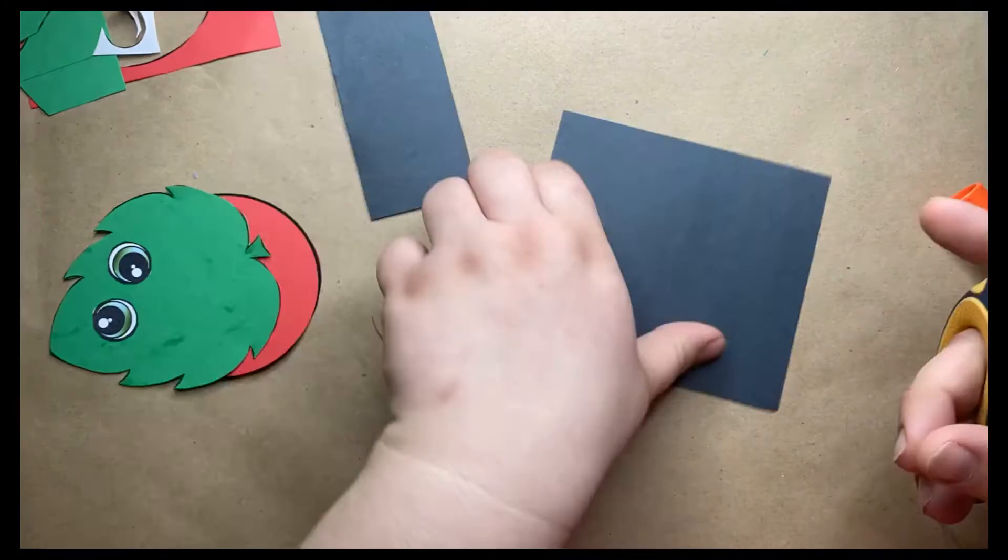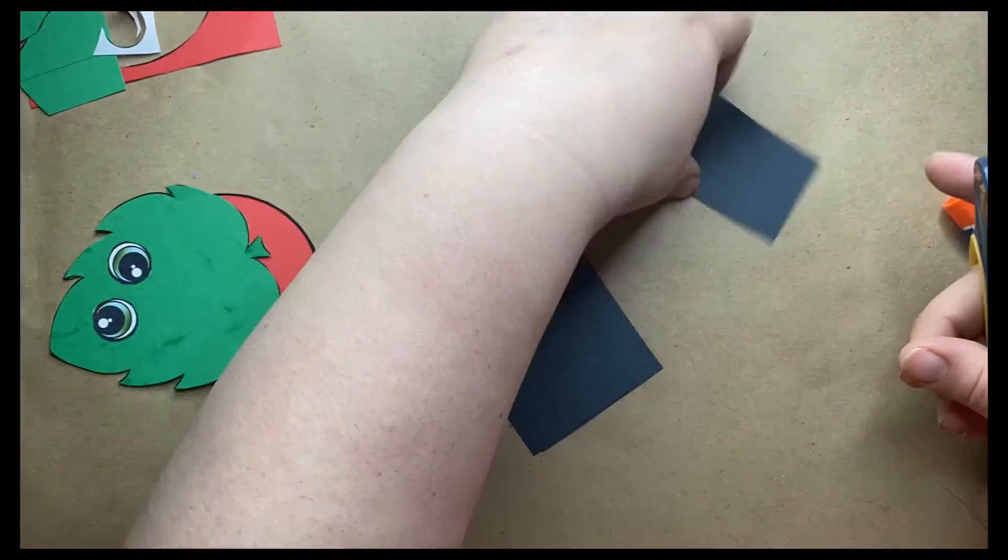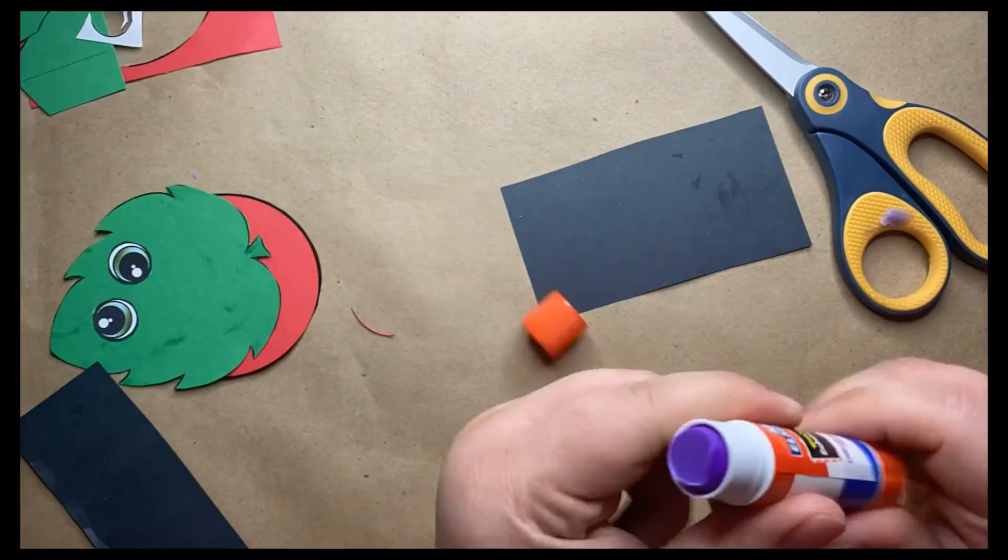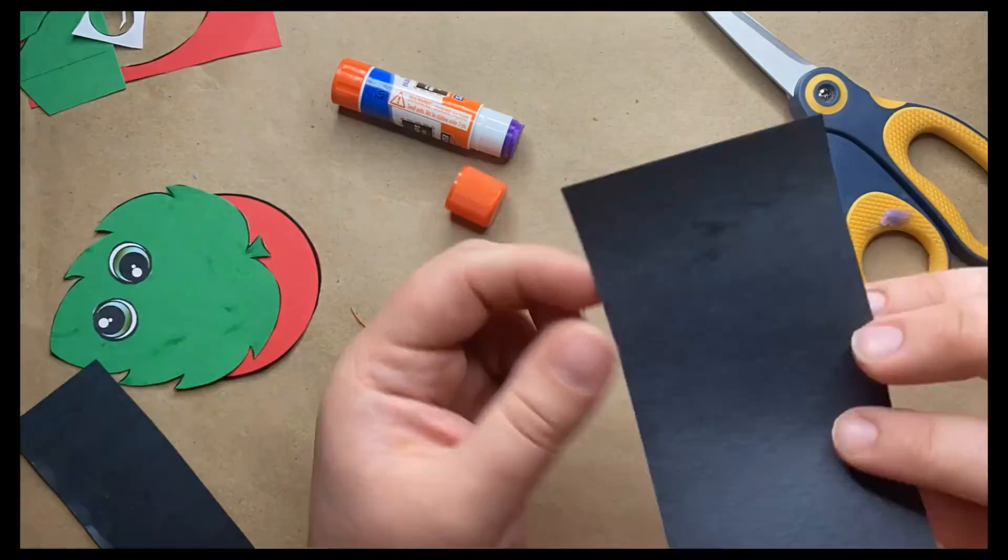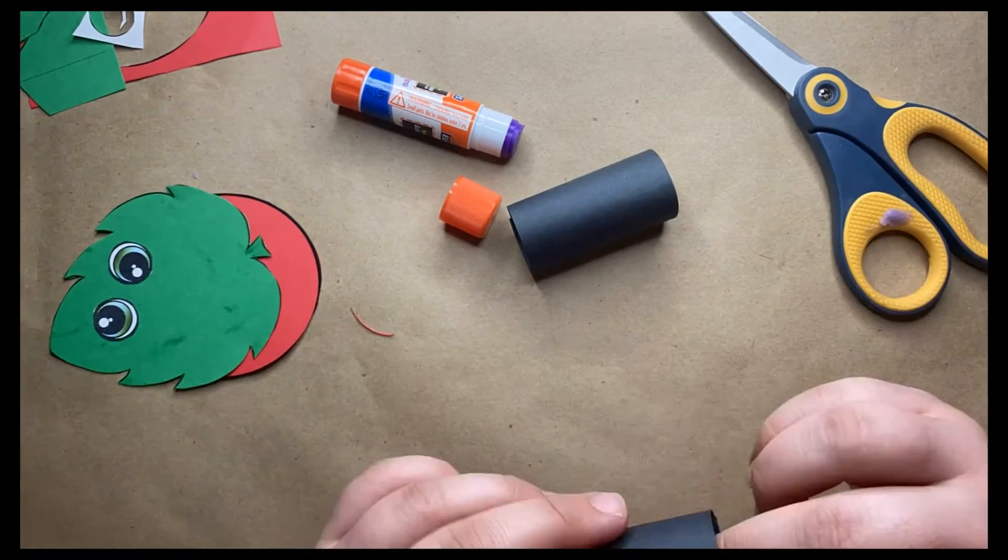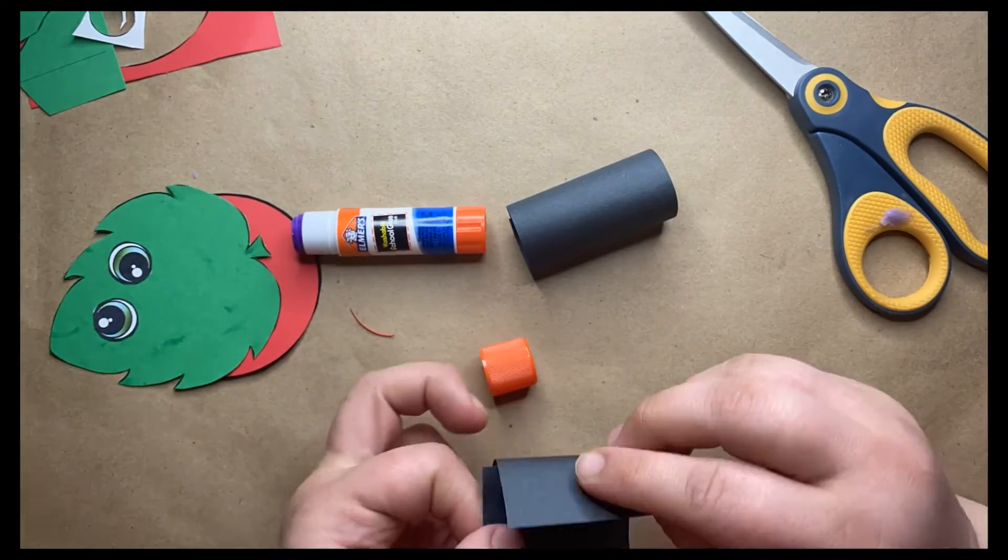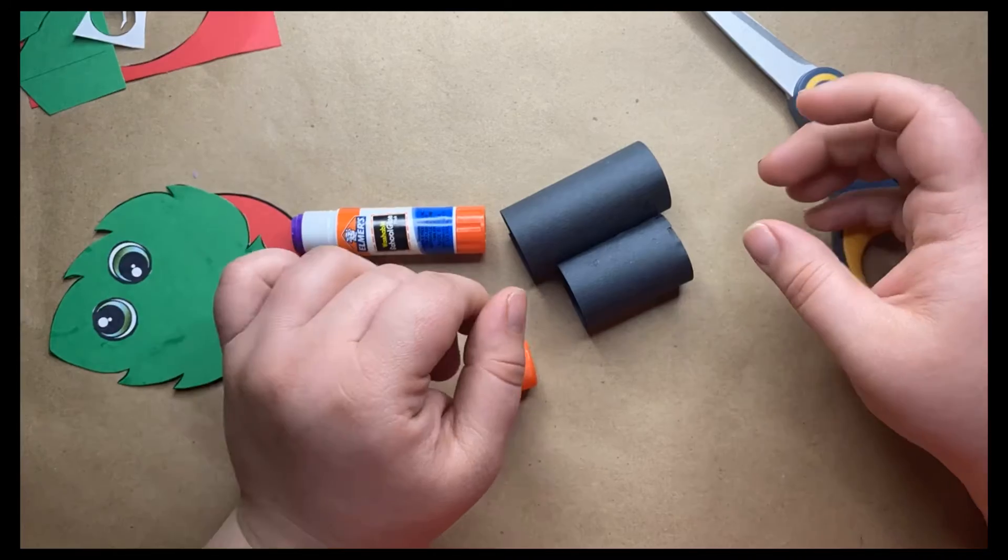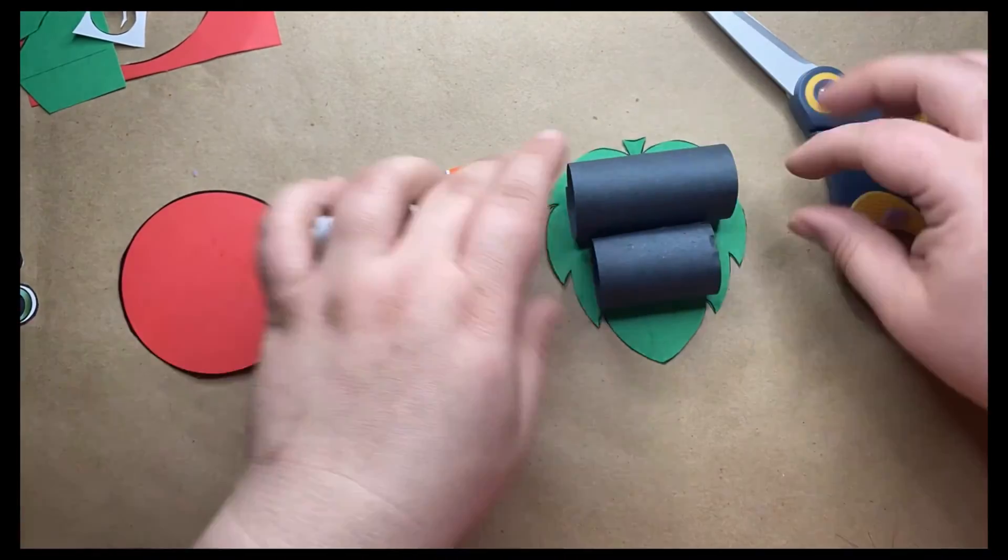Now take your black piece of paper and cut two large strips, one a little bit skinnier than the other. You want one to be about two inches and the other to be about two and a half. And then roll those up and glue them to make two little tubes. The smaller one will be your ladybug's head and the big one will be the body.